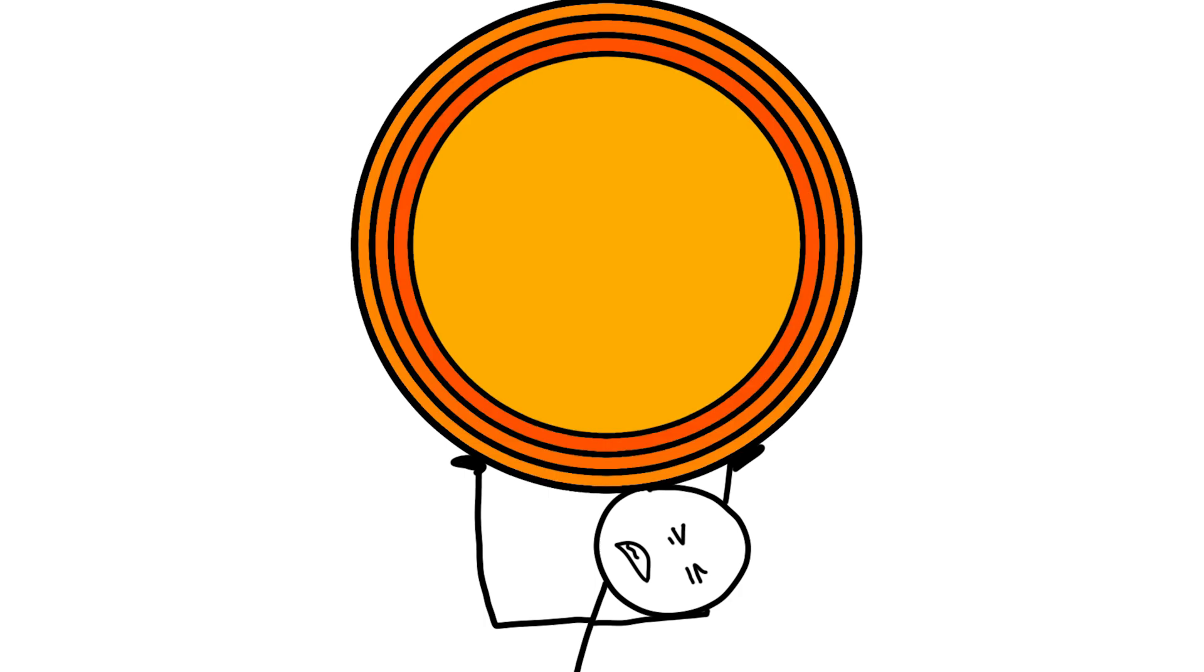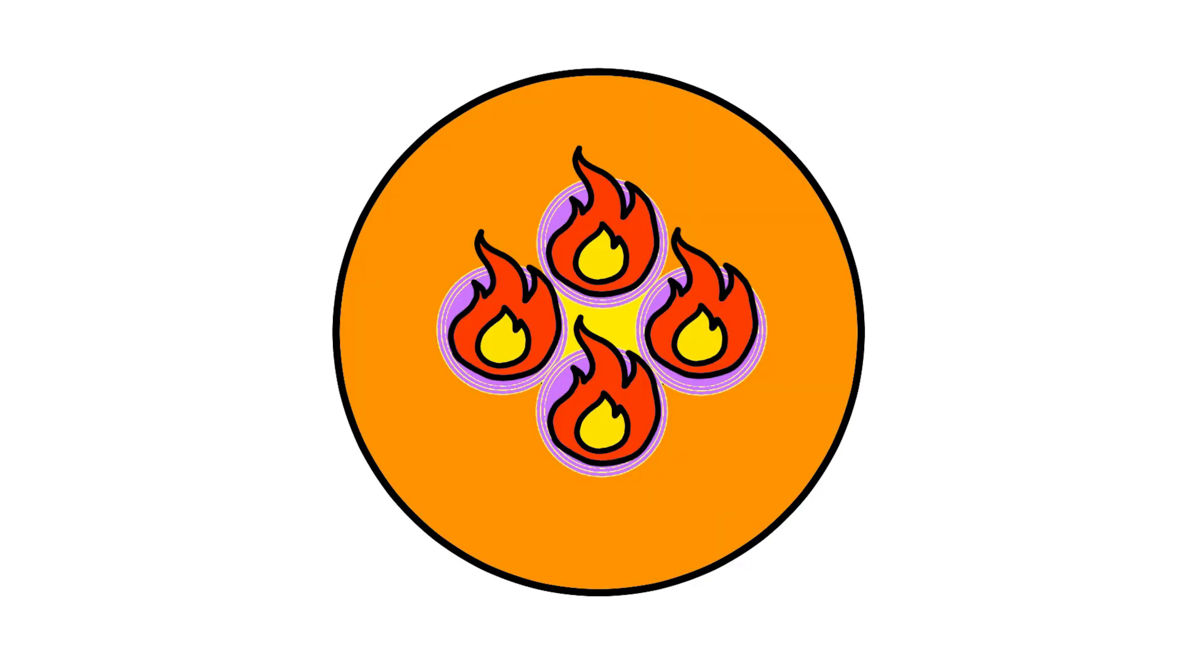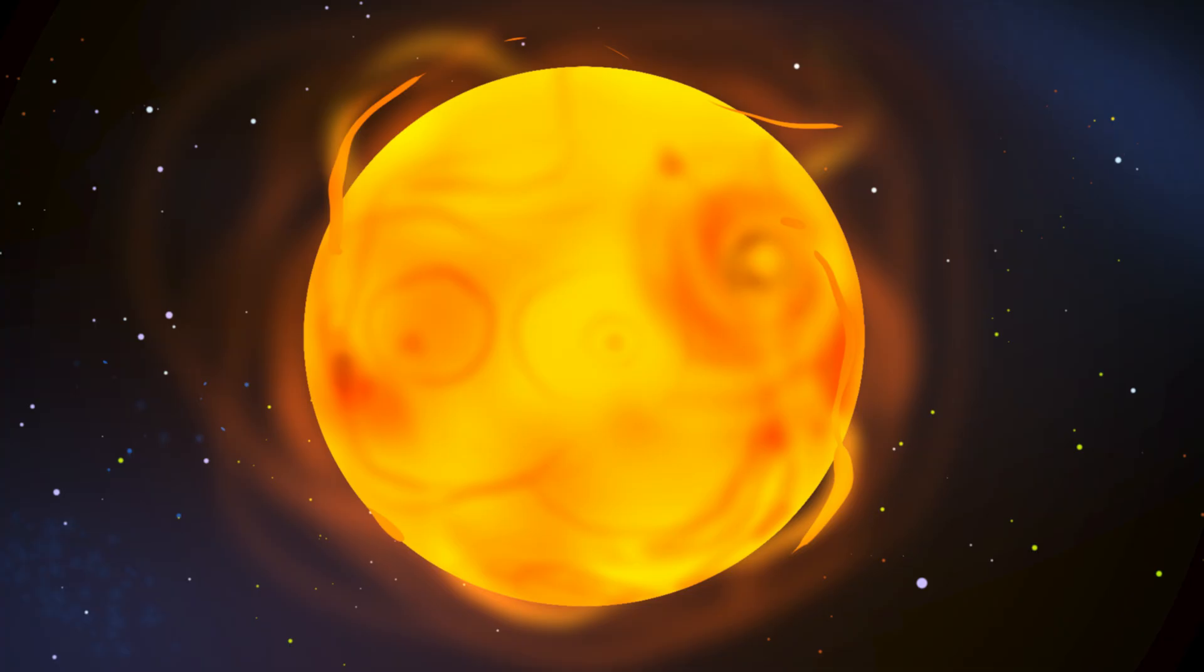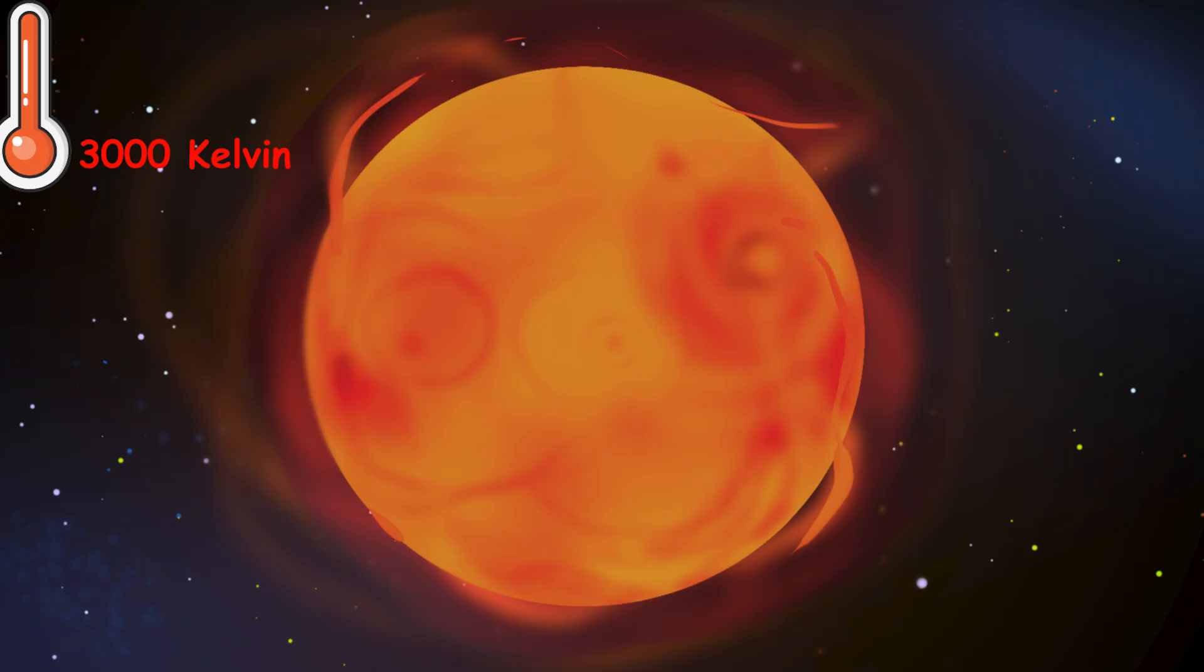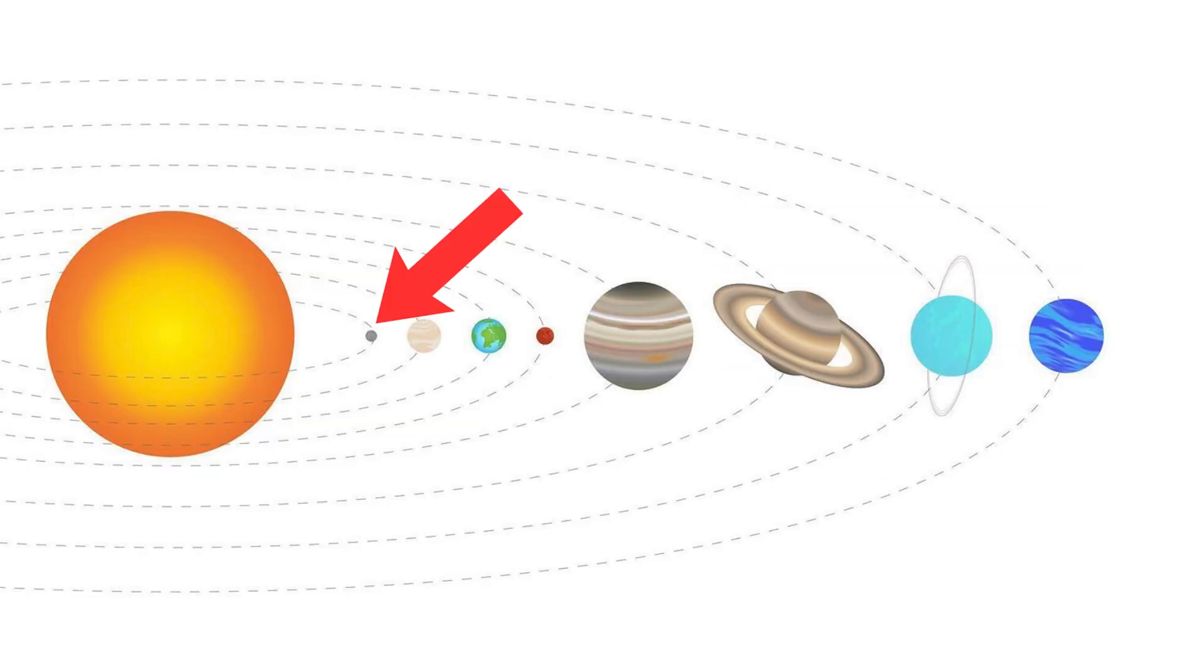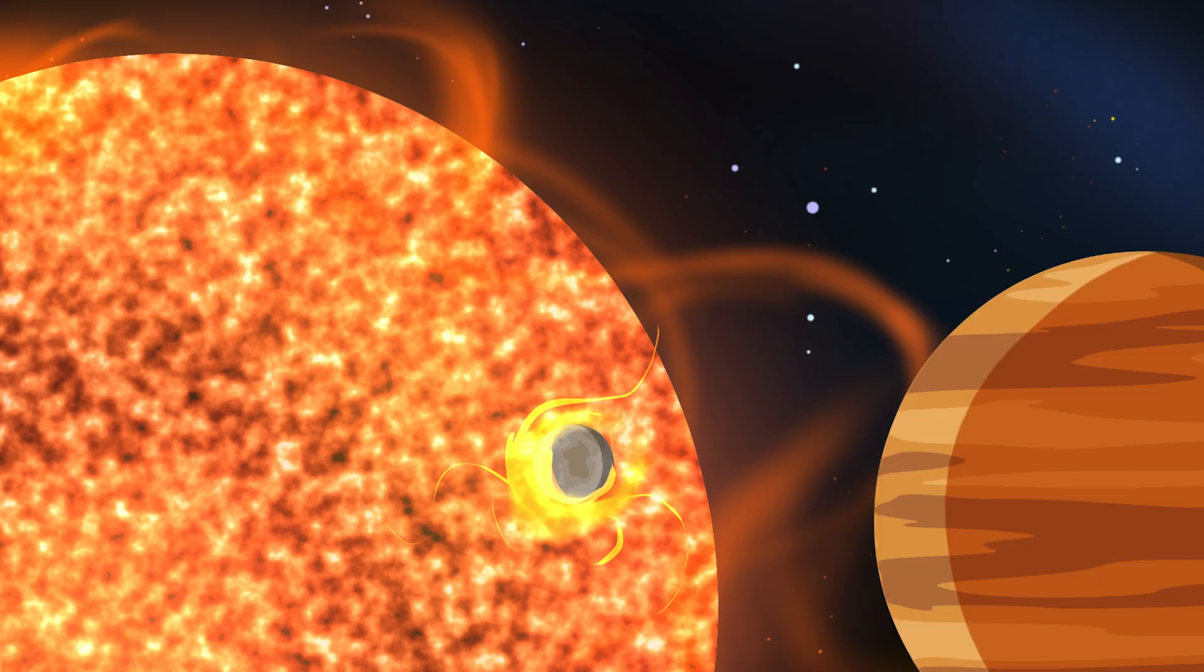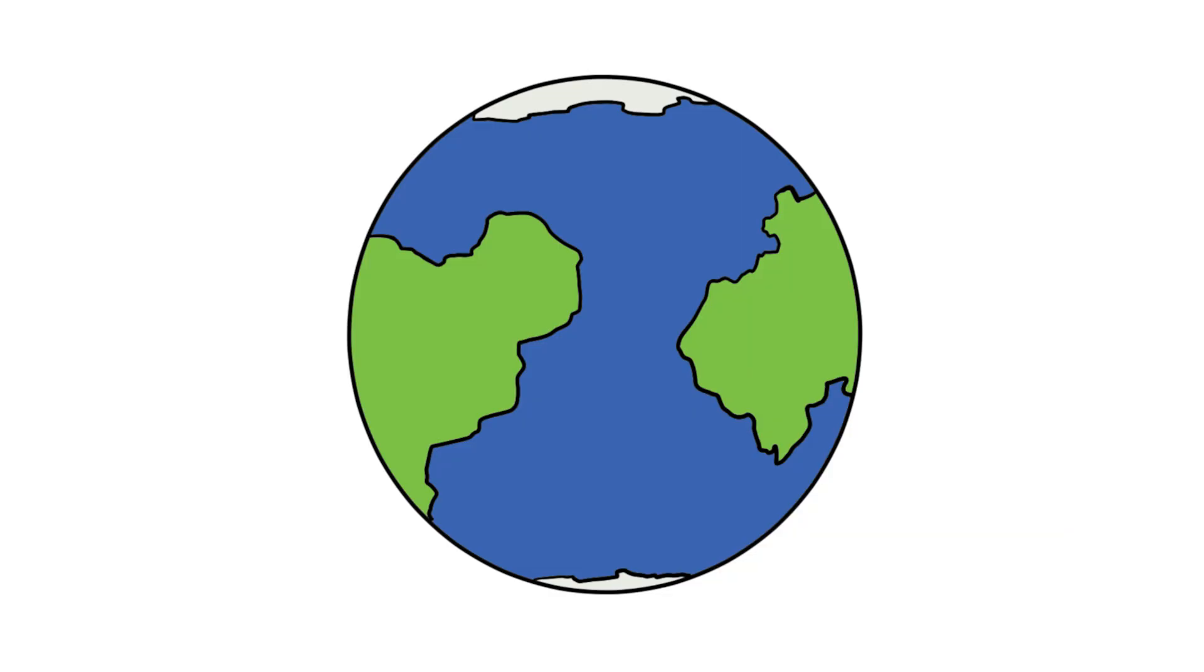The Sun's outer layers expand outward, driven by this shell-burning process. The Sun grows to 100 times its original radius. Its surface temperature drops to around 3,000 Kelvin, giving it a dull red color. Mercury, the innermost planet, is consumed by the expanding stellar atmosphere. Venus follows. Earth's fate hangs in the balance.